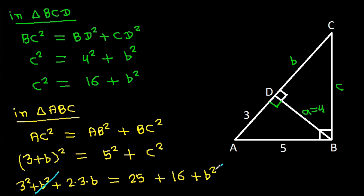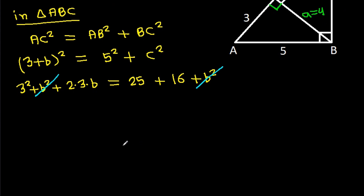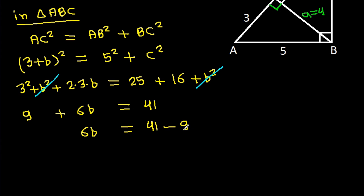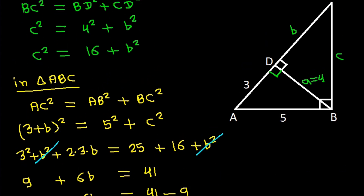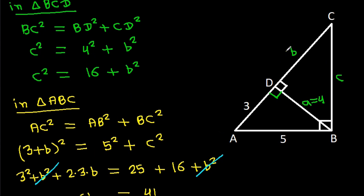B squared cancels out. So 9 plus 6B equals 41. Therefore 6B equals 41 minus 9, which is 32. So B equals 32 by 6, that is 16 by 3. Therefore CD, which is B, equals 16 by 3.